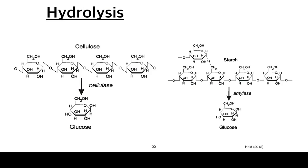These diagrams summarise the hydrolysis processes — polysaccharides broken down into glucose. On the left we have cellulose, aided by the enzyme cellulase. For starch, the enzyme is called amylase, which breaks down starch into individual glucose monomers.